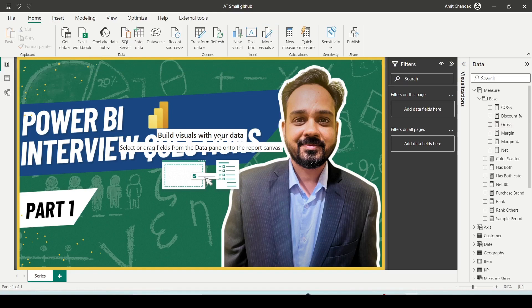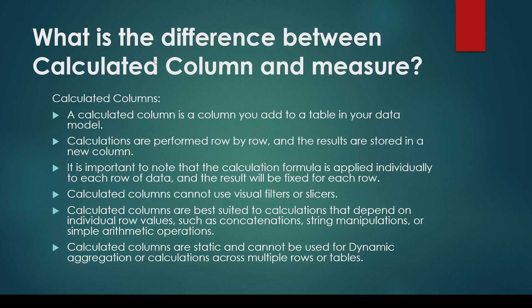Because they are done at runtime and on the visual, they are dynamic in nature. Let's look at the definition: a calculated column is a column that you add to a table in your data model. Calculations are performed row by row and results are stored in a new column. It is important to know that the calculation formula is applied individually to each row of data and the results will be fixed for each row.